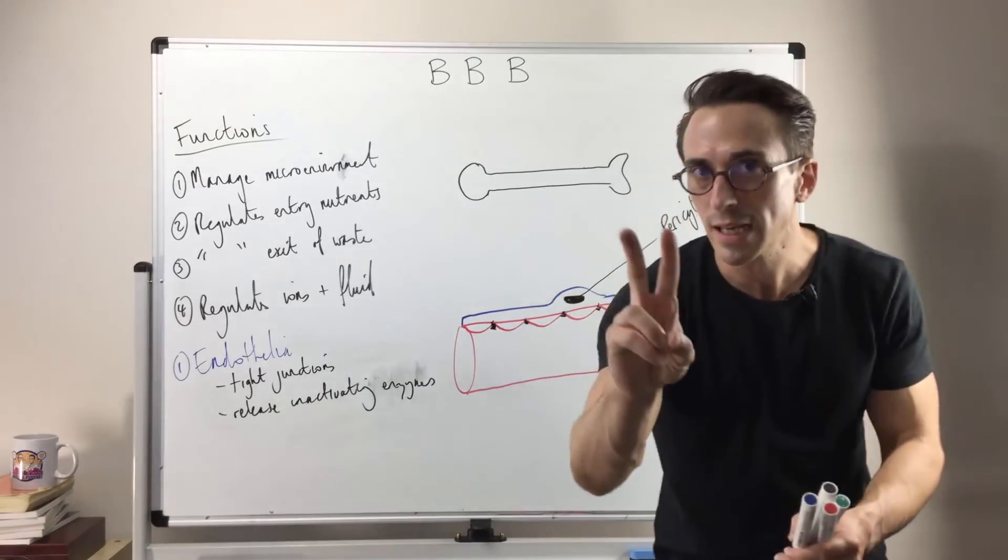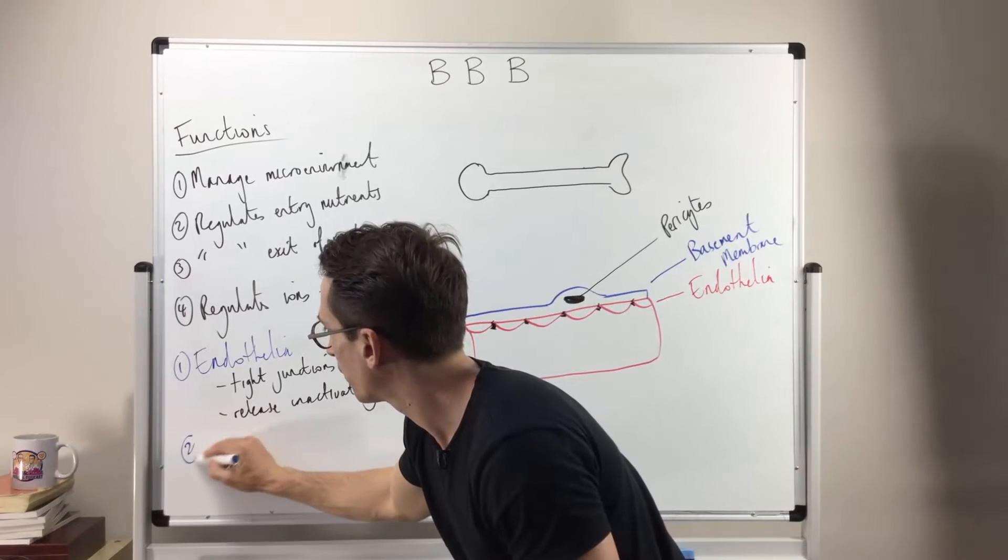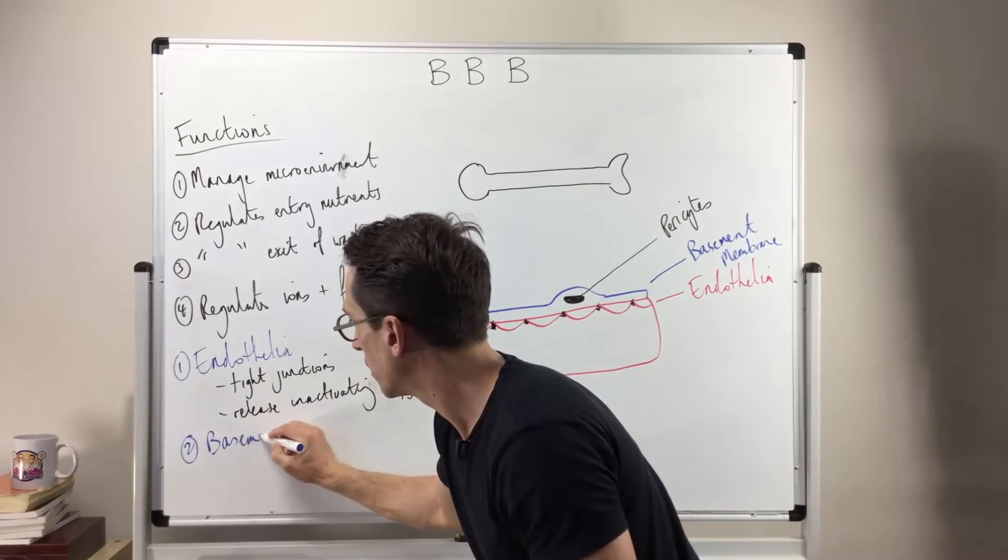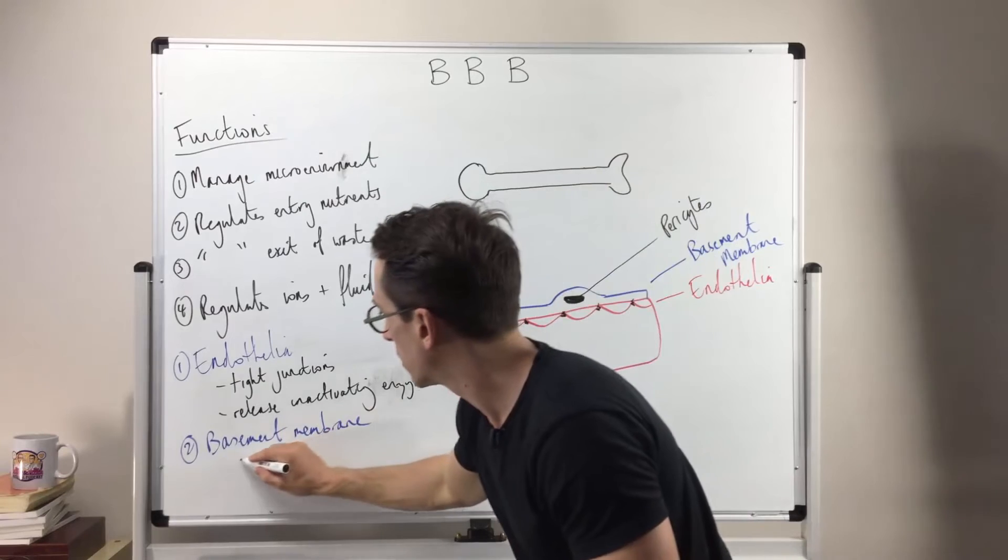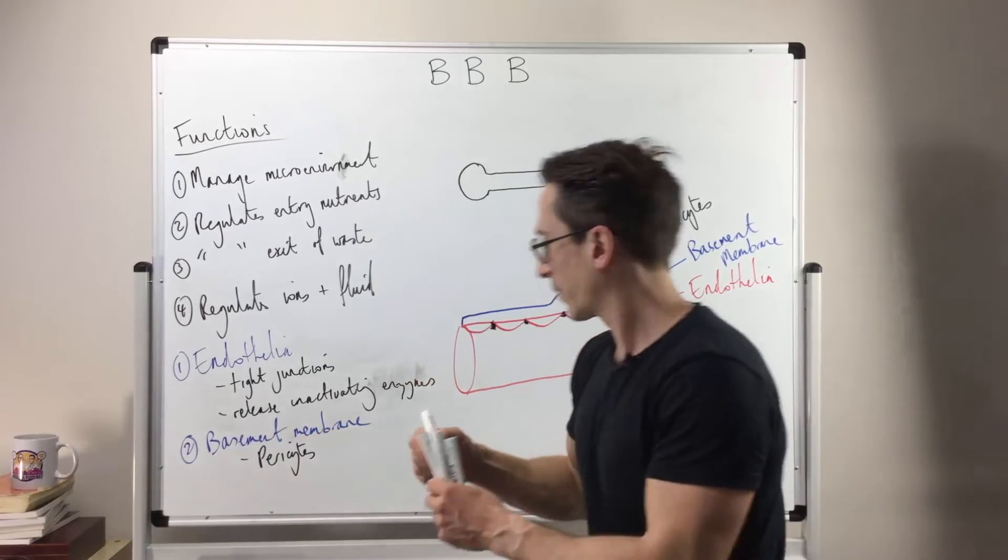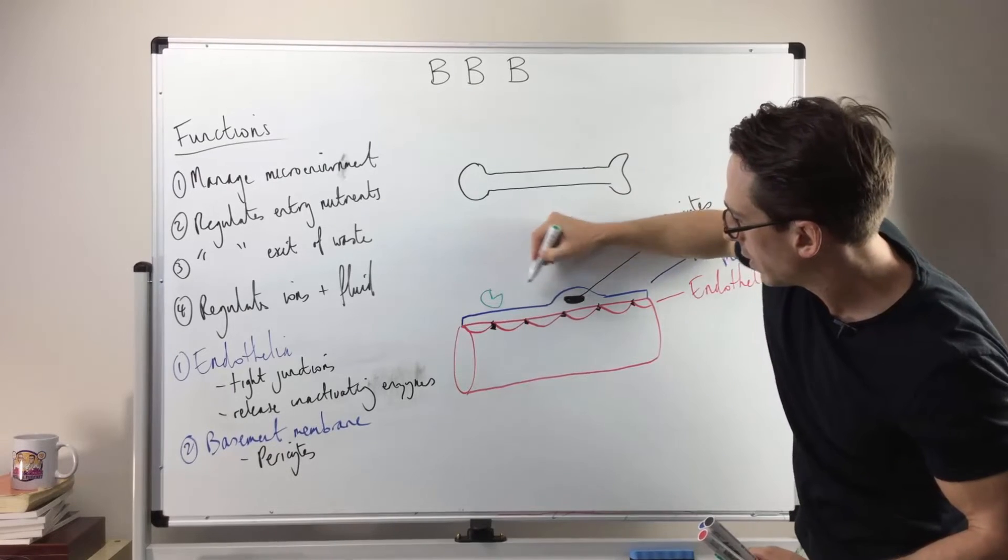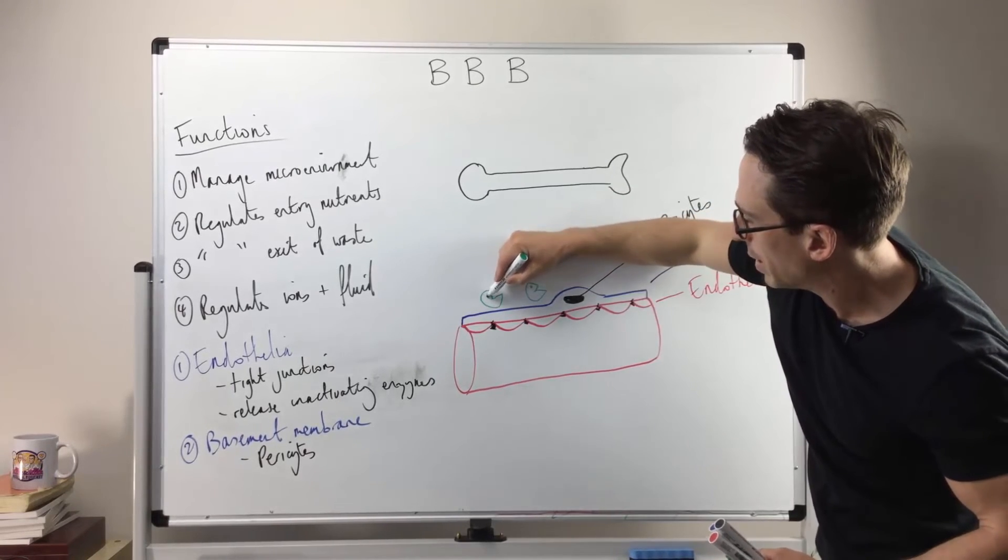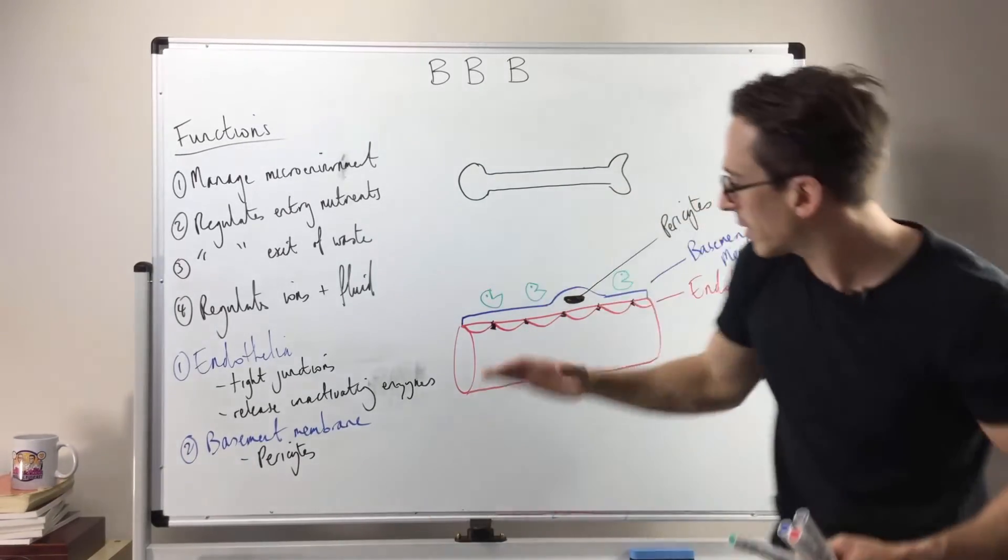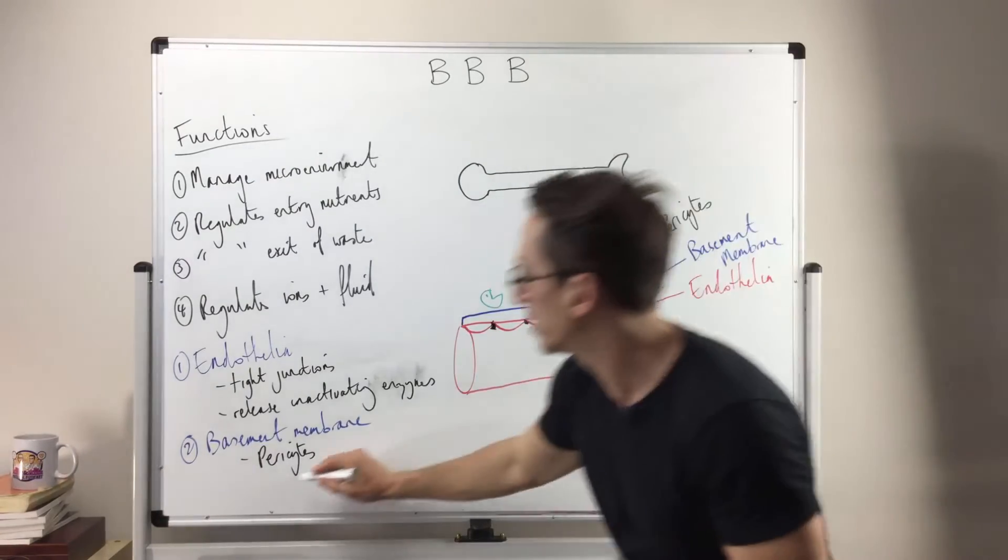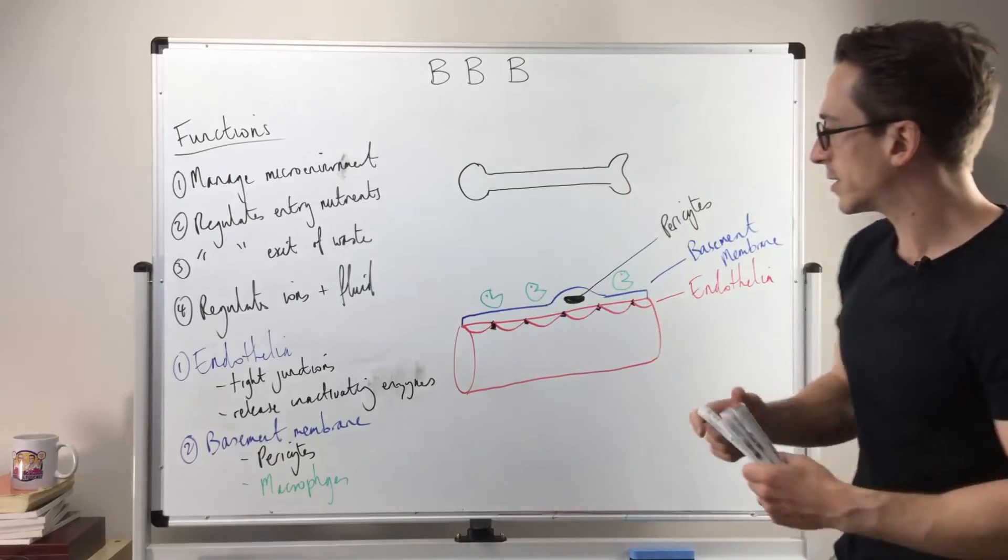So in regards to the second line of defense, it's the basement membrane which is connective tissue, remember, with these embedded pericytes. Now surrounding these are some innate immune cells that we call macrophages. Now we know that macrophages mean big eaters and so they are just in this particular area and they're just keeping an eye out. If anything gets through they get to gobble them up. So we also have macrophages which help protect the brain parenchyma or brain tissue itself.